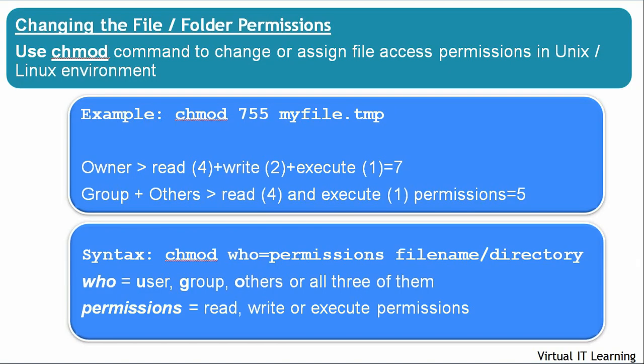Now we will discuss how to change file and folder permissions. We use the chmod command to change or assign file access permissions in Unix and Linux. For example, chmod 755 gives all access permissions — read, write, and execute — to the owner, which is the combination 4 plus 2 plus 1 equals 7, and then read and execute permissions to group members and other users.